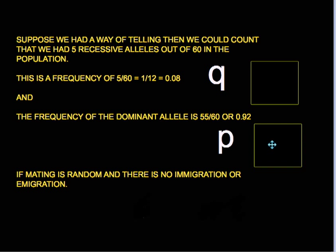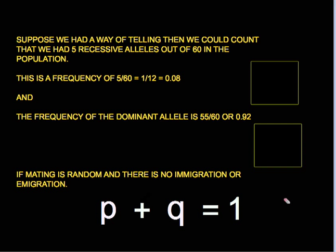Assuming the squirrel population was fairly isolated — with no immigration or emigration — and that the squirrels mated at random, we can say that p plus q equals 1. Simply put, the frequency of the recessive allele plus the frequency of the dominant allele gives you the complete set of alleles in the population: five recessive plus fifty-five dominant equals sixty, and 0.08 plus 0.92 equals 1.